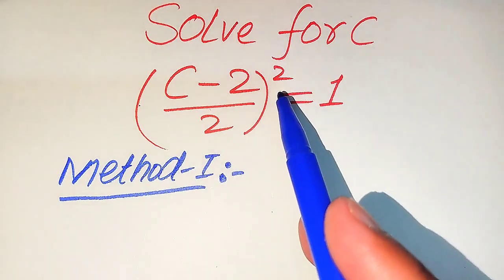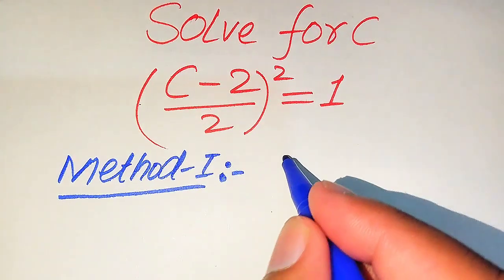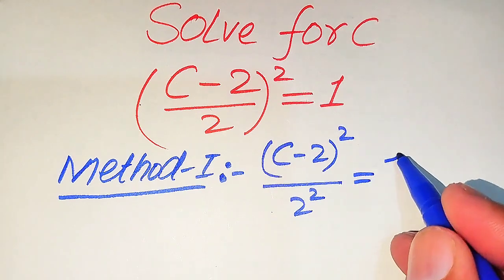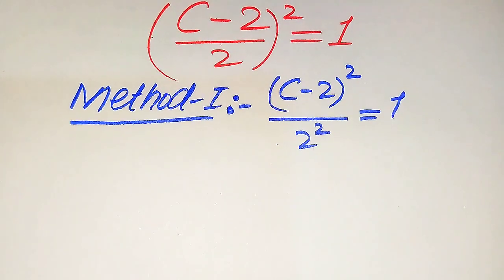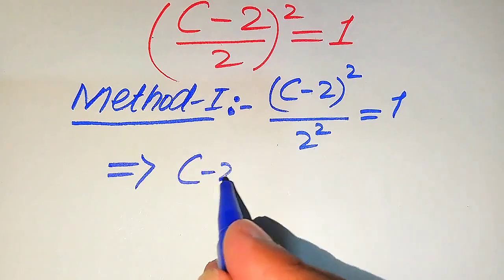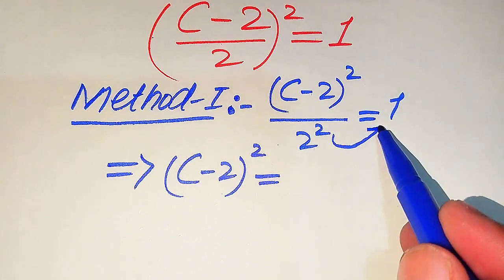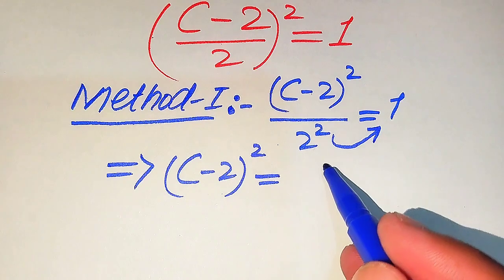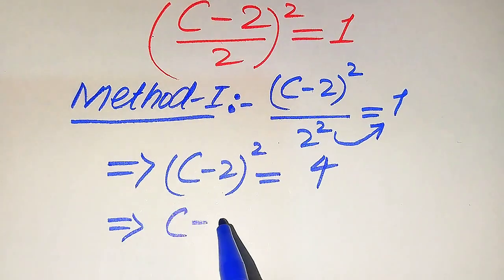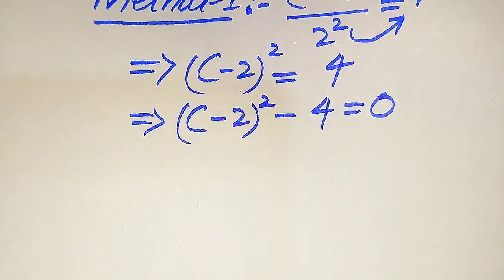First we need to break this square sign. We can apply the square sign to both terms separately, so it will be written as (c minus 2) whole square divided by 2 square equals 1. In the next step, (c minus 2) whole square over 2 square gives us (c minus 2) whole square equals 2 square, which is 4. Moving this 4 to the left hand side gives (c minus 2) whole square minus 4 equals 0.